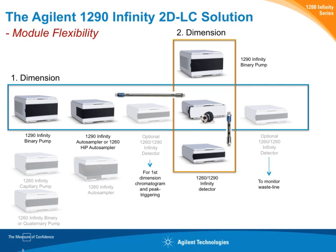On the first dimension, you can use almost anything you want — a 1290 binary pump, a capillary pump, or a 1260 pump — as well as a high-performance or standard autosampler. You can add a detector to see what is happening in the first dimension and also on the waste line. On the second dimension, it makes sense to add a detector such as a diode array or even a mass spectrometer.